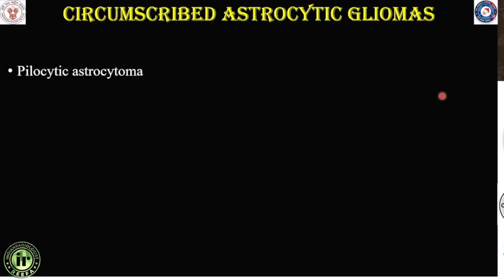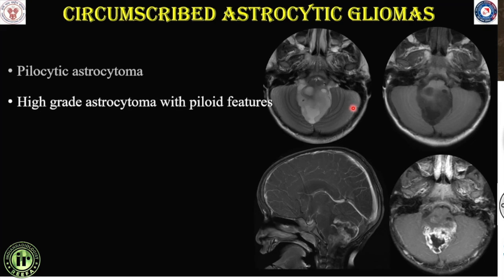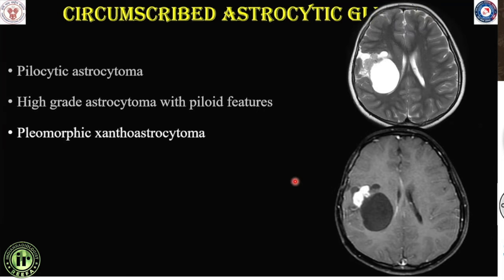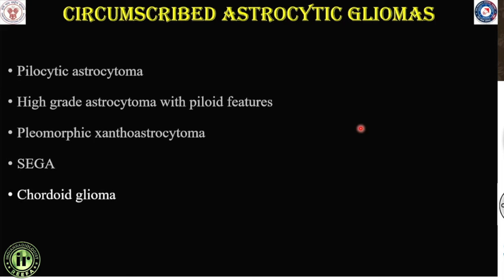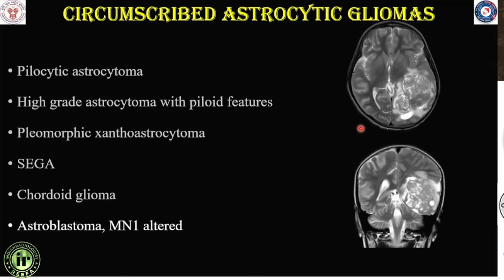To summarize circumscribed astrocytic gliomas: pilocytic astrocytoma is classically a posterior fossa solid-cystic lesion with a mural nodule. High-grade astrocytoma with piloid features is a posterior fossa neoplasm with heterogeneous enhancement but without restricted diffusion, differentiating it from medulloblastoma. Pleomorphic xanthoastrocytoma is exclusively supratentorial, cystic with a pial-based mural nodule, and can cause calvarial scalloping. SEGA is always associated with tuberous sclerosis. Chordoid glioma is a well-circumscribed neoplasm of the third ventricle with florid homogeneous post-contrast enhancement. Finally, astroblastoma occurs in the parietal or occipital regions with high female preponderance.